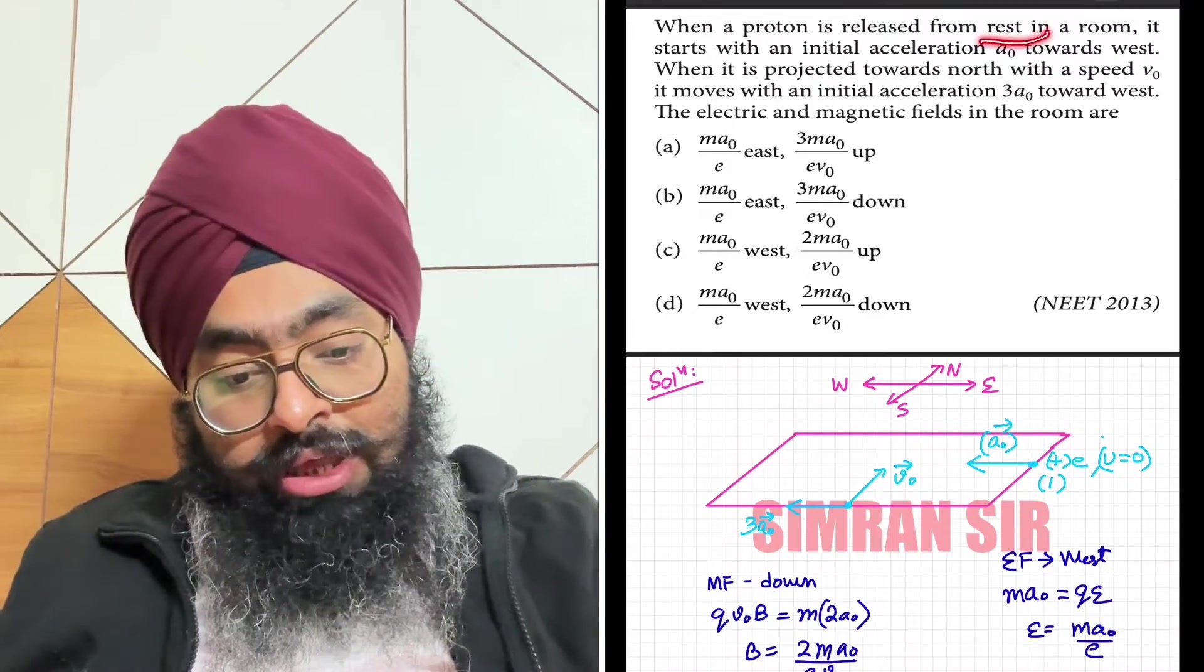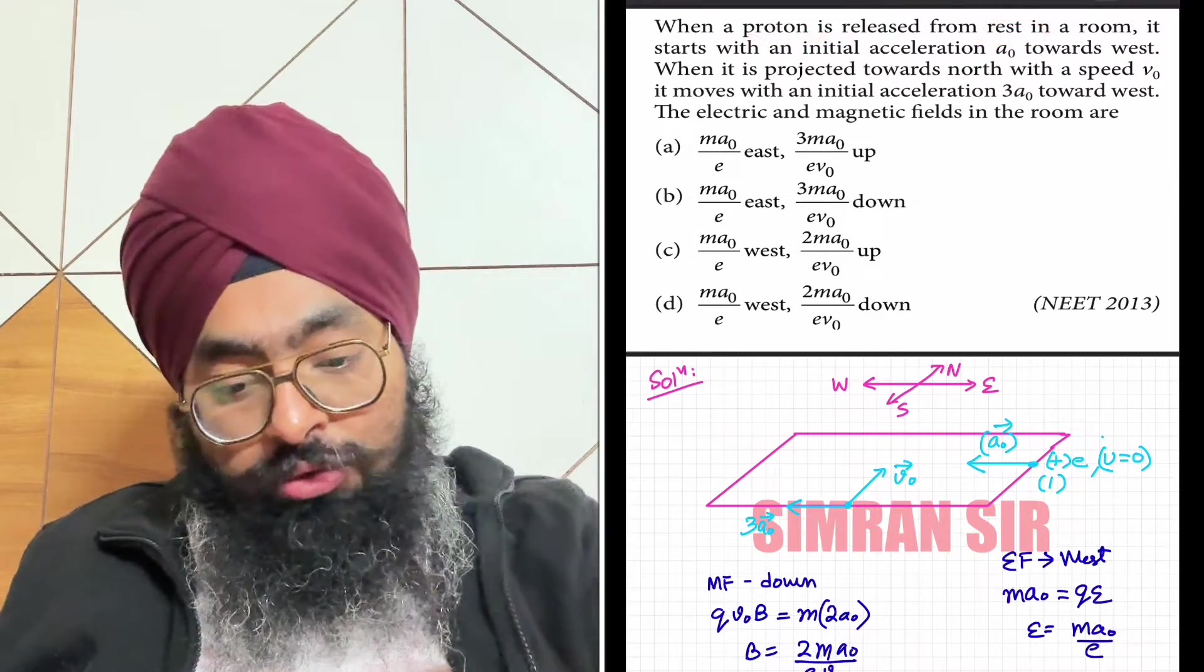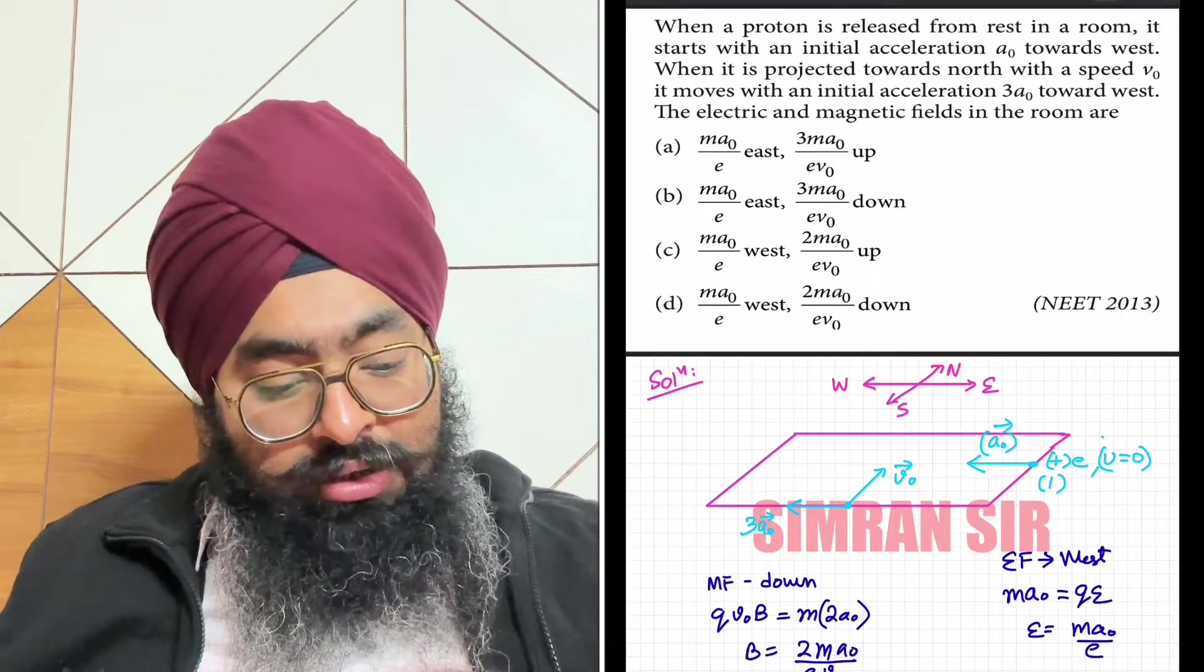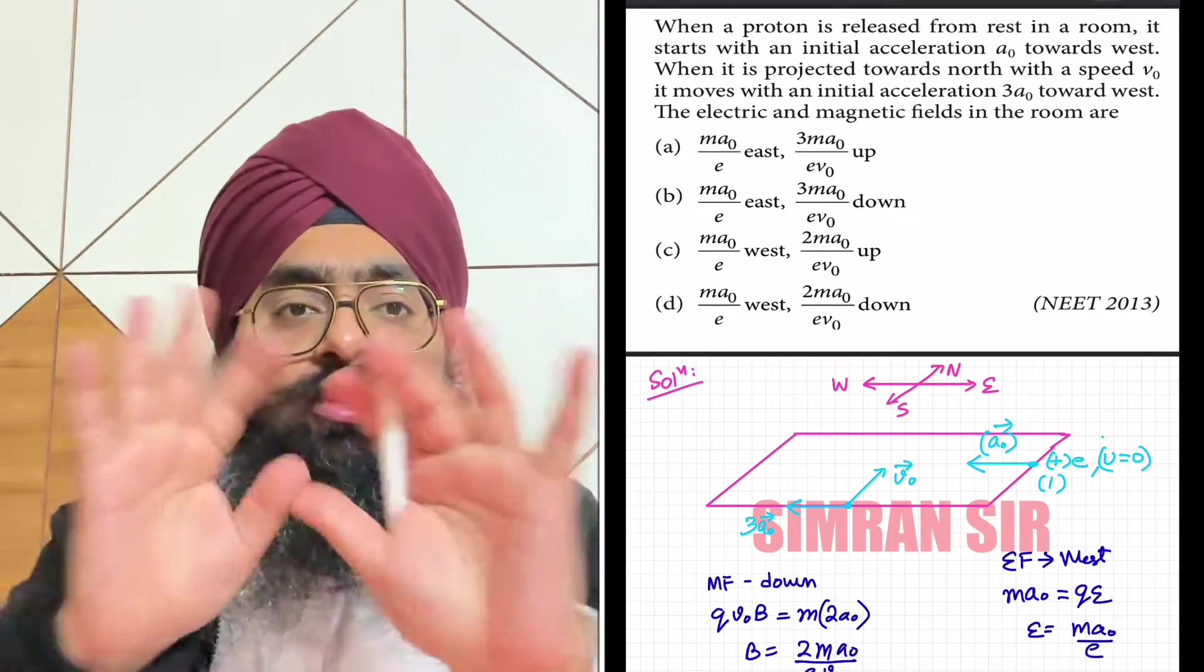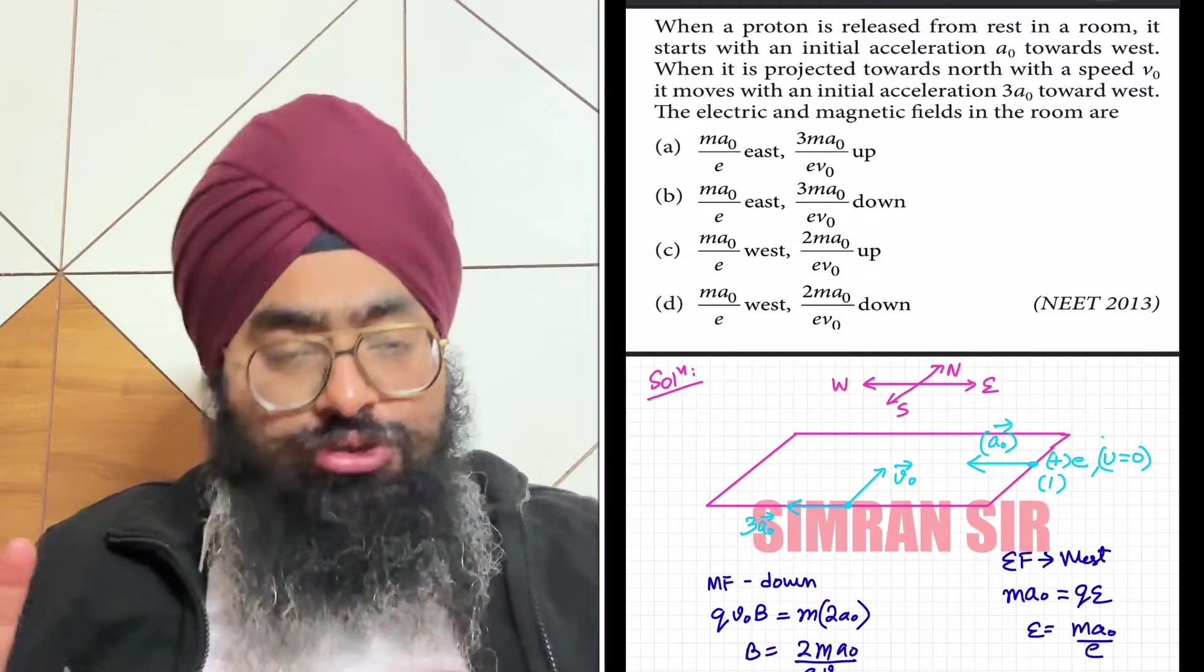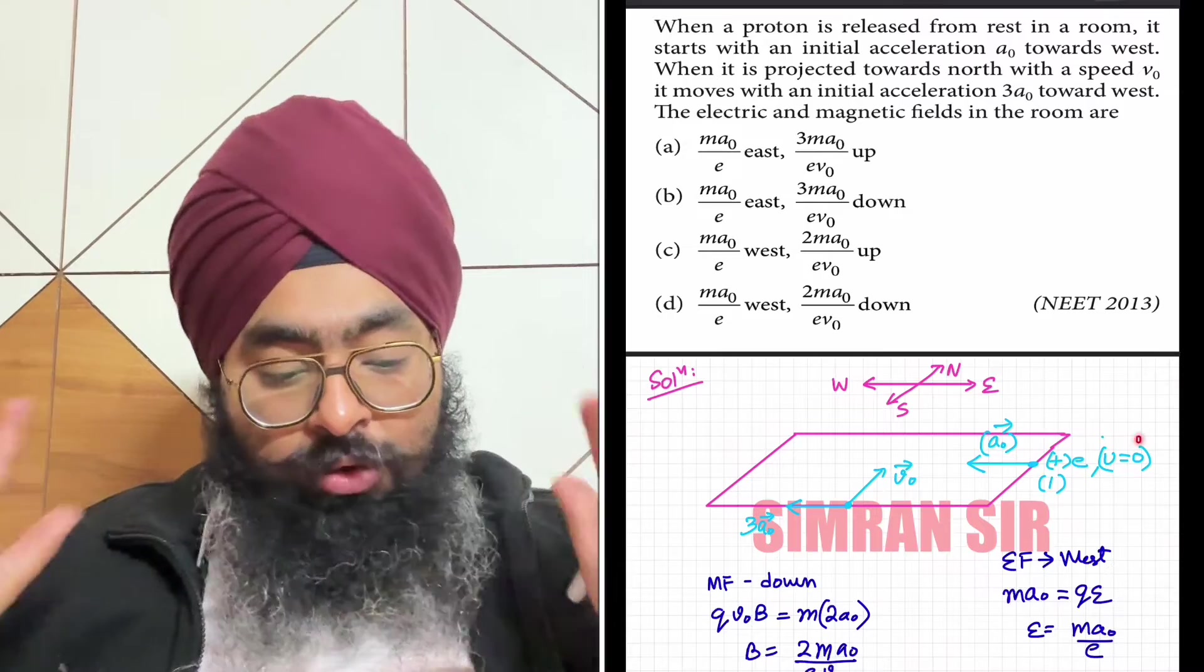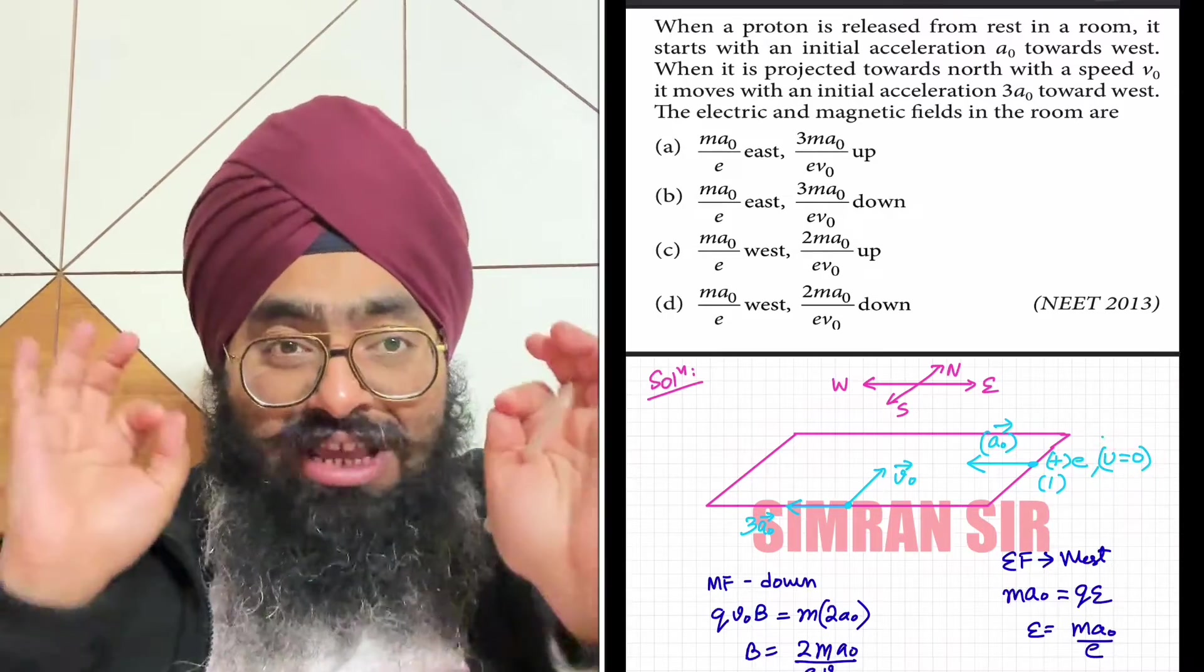Now the question is that a charged particle, which is a proton, is released from rest. So here is the charged particle. Its initial speed is zero. The particle is released in this region where electric and magnetic fields are present.